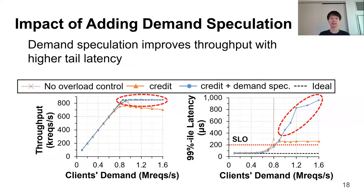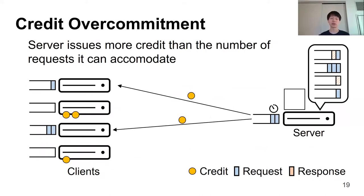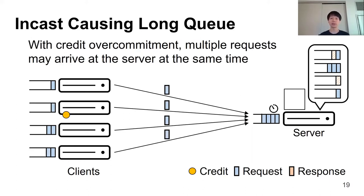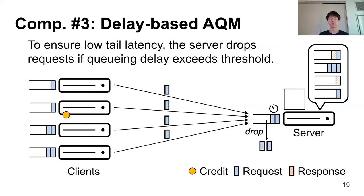With demand speculation, Breakwater can achieve high throughput, but with higher tail latency. With piggybacking and demand speculation, clients with no demand may have unused credits. Because those unused credits do not increase the queuing delay at the server within an RTT, the server decides to issue more credits to other clients. This leads the server to issue more credits than it can accommodate — what we call credit over-commitment. With credit over-commitment, multiple clients can send requests to the server at the same time in the future, causing incast. When incast happens, tail latency becomes higher as the request queuing delay increases.